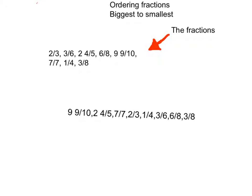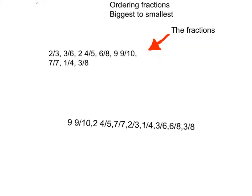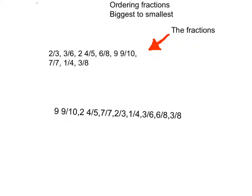So, these are the fractions in order from biggest to smallest. First is 9 and 9 tenths, then is 2 and 4 fifths because those numbers have whole numbers before them. So, those are obviously the biggest.